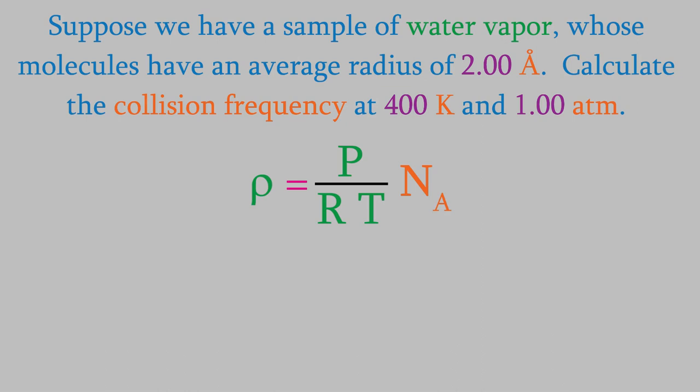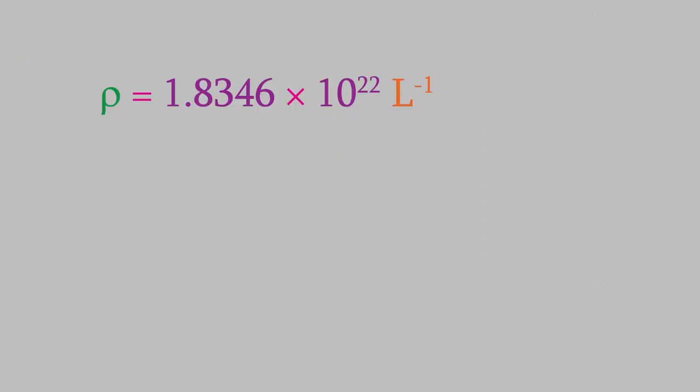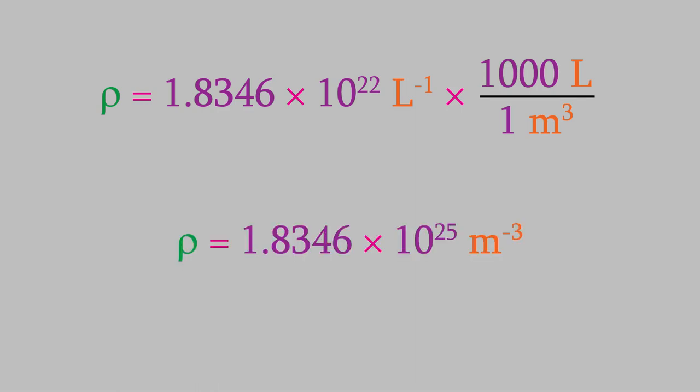Since p is in atmospheres, it makes sense to use the version of r that has the units of liters times atmospheres over kelvins times moles. If we do that, we get a result of rho equals 1.8346 times 10 to the 22nd molecules per liter. Remember, we want the units to cancel out, so we should convert liters to cubic meters. You might recall that there are 1,000 liters per cubic meter, so this changes our answer to 1.8346 times 10 to the 25th molecules per cubic meter.